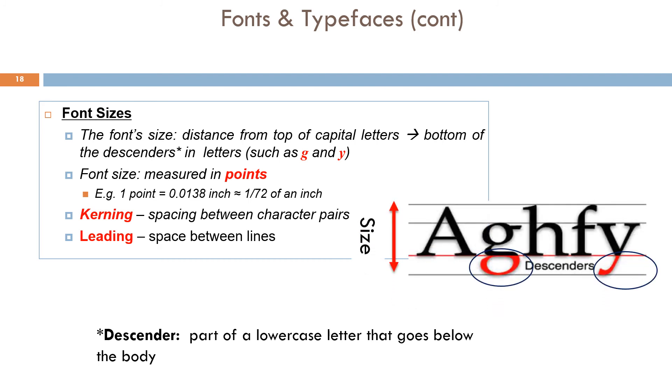Descenders means part of a lowercase letter that goes below the body. Font size is measured in points. For example, 1 point equals 0.0138 inch, approximately equal to 1 over 72 of an inch. Kerning and leading also play important roles in font size. Kerning is the spacing between character pairs, while leading is space between lines.